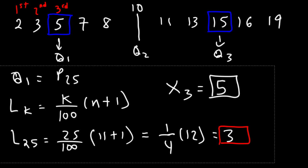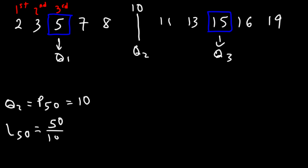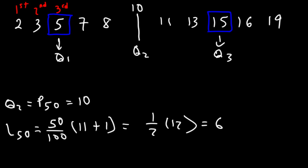Let's calculate the second quartile, which is the 50th percentile, and we know it to be 10. Using the formula: 50/100 × (11 + 1) = 0.5 × 12 = 6. So the second quartile is the sixth item from the left. Counting from the left, the sixth item is 10, which confirms our second quartile.